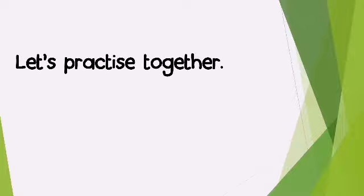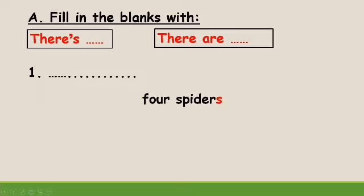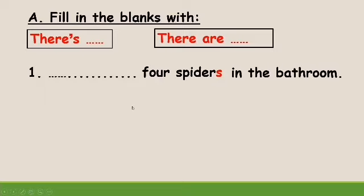Now, let's do some practices together. First practice: fill in the blanks with 'there is/there's' or 'there are'. First sentence: four spiders in the bathroom. To choose the correct phrase, look at the noun — 'four spiders'. Is it singular or plural? Plural nouns, right? So we choose 'there are'. There are four spiders in the bathroom.